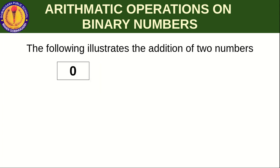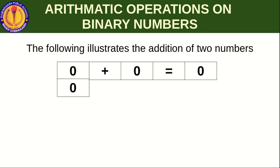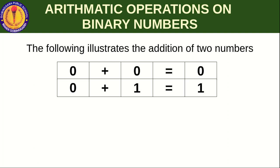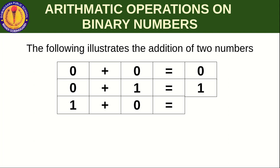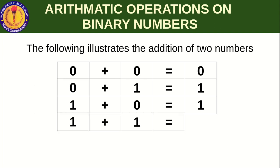Let us take an example for binary addition. Zero plus zero is zero. Zero plus one is one. One plus zero is one — same as in decimal numbers, one plus zero is equal to one, and zero plus one is equal to one, and zero plus zero is zero.